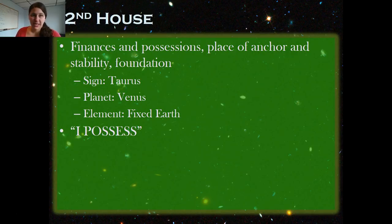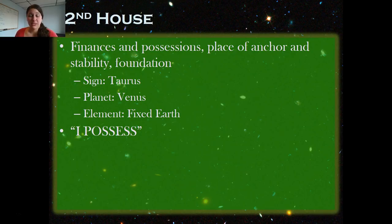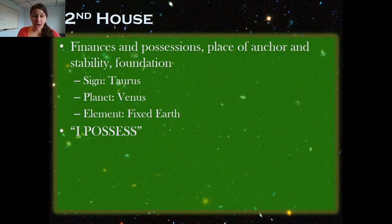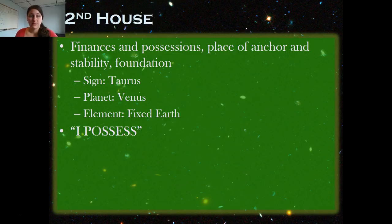The second house is ruled by Taurus and the planet Venus — a very loving, protective energy, fixed earth, very strong and stable. It represents your place of anchor and stability, the foundation of your life. Not the foundation of yourself — this is now the foundation of your life. The progression goes from 'I am' to 'I possess.' It's your finances, your possessions, and the way you interact with gathering things.